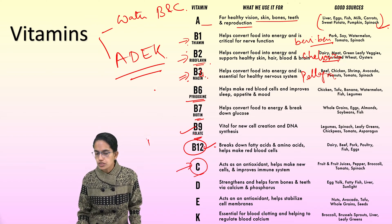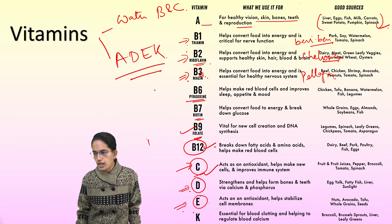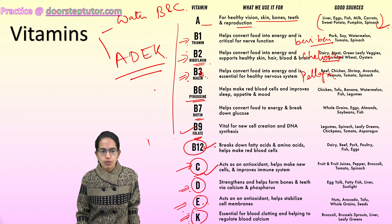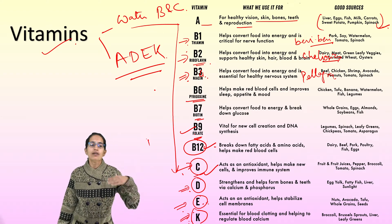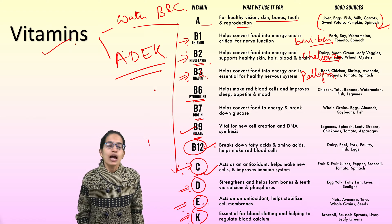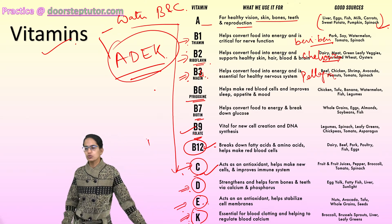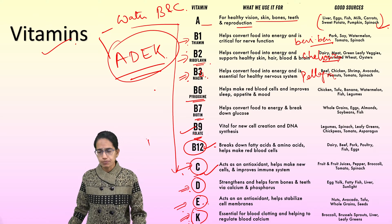Scurvy is caused by deficiency of vitamin C. Deficiency of vitamin D leads to osteomalacia in adults and rickets in children. Vitamin E is known as the anti-sterility vitamin, also called tocopherol, and its deficiency can cause destruction of red blood cells. Vitamin K is important for blood clotting. Importantly, vitamins B and C, if taken in excess, are released through urine. However, vitamins A, D, E, and K accumulate in the body, and excess of these fat-soluble vitamins leads to a condition called hypervitaminosis.